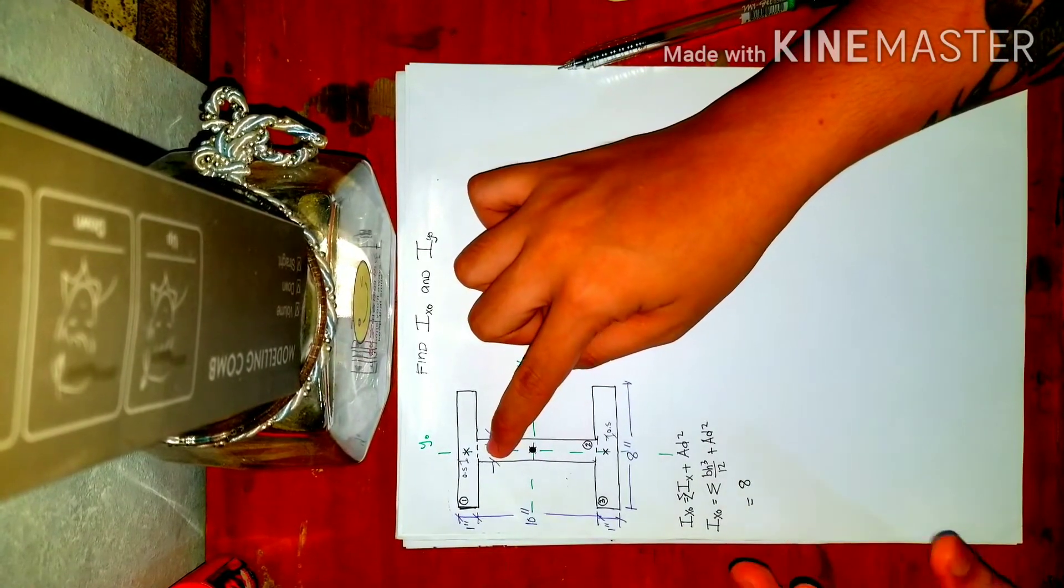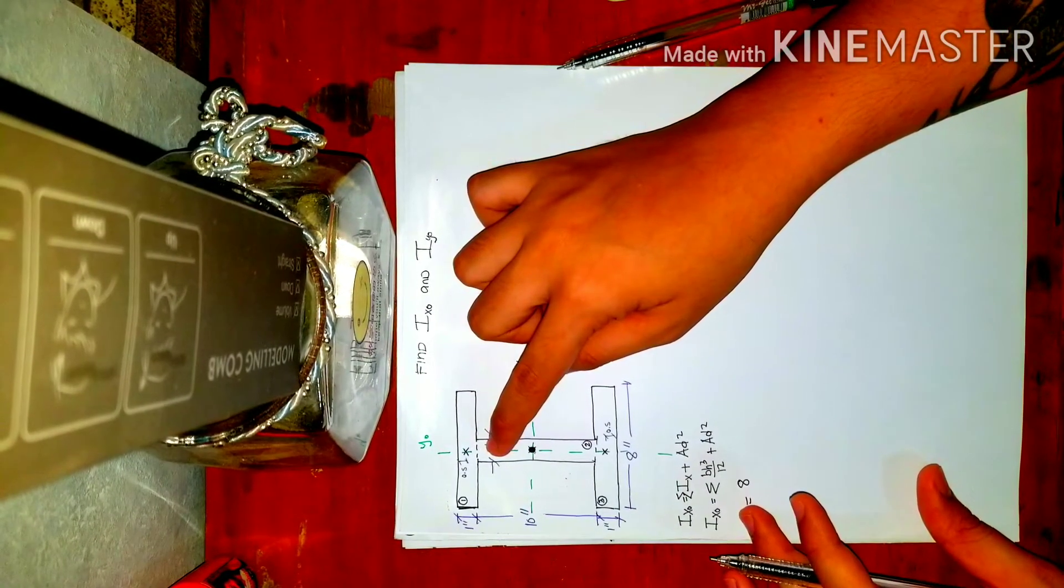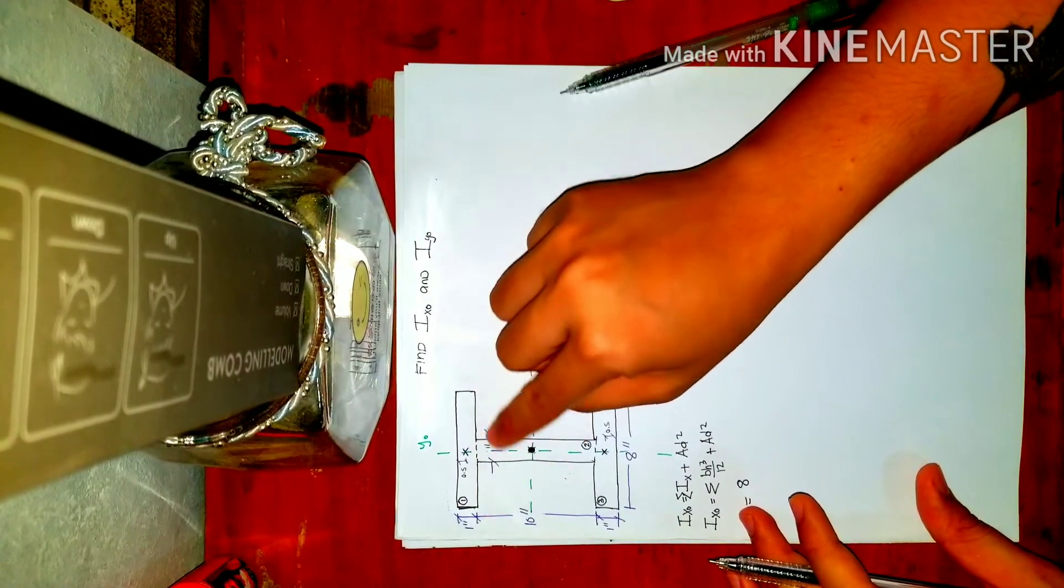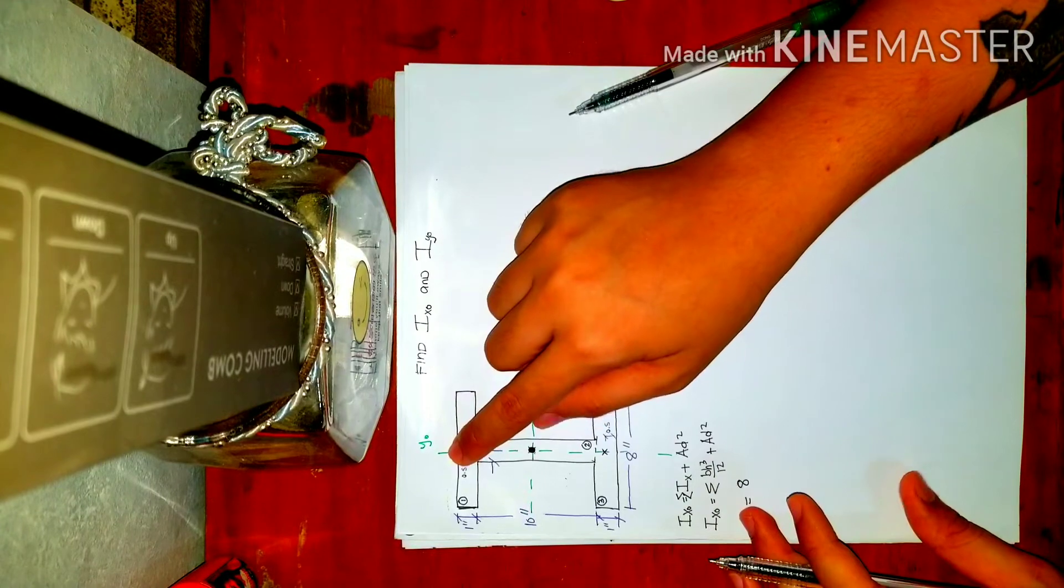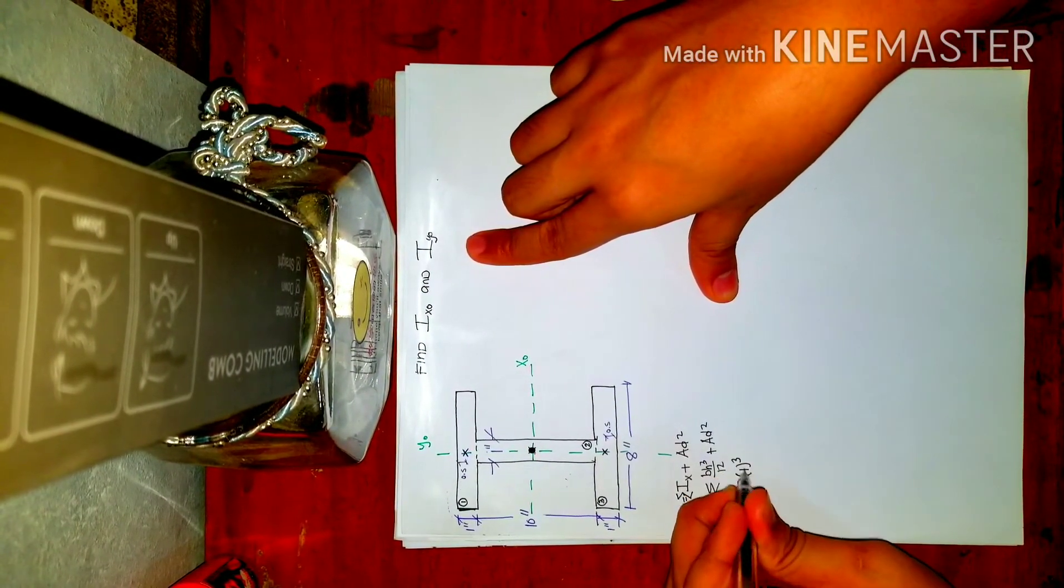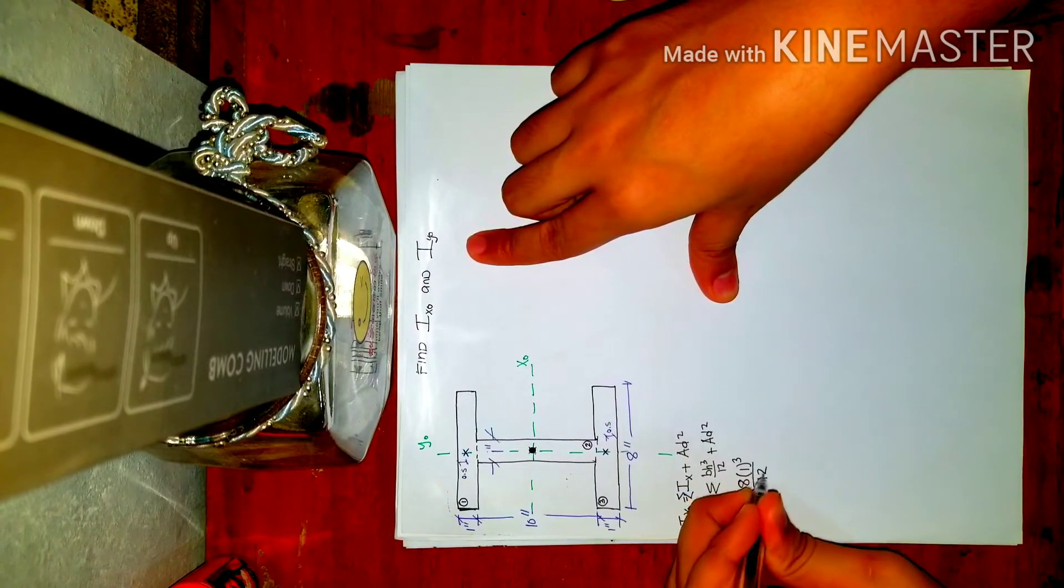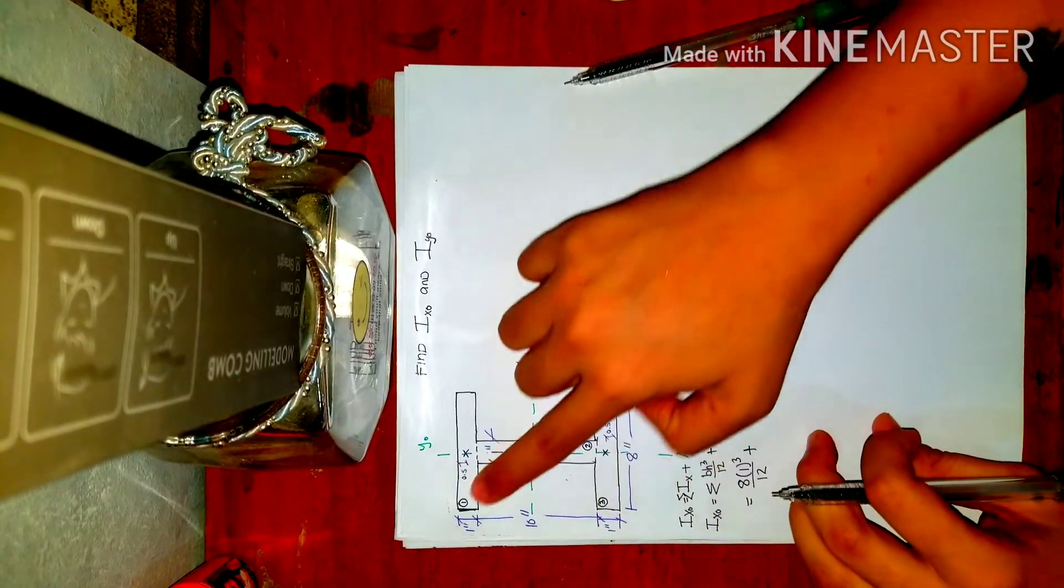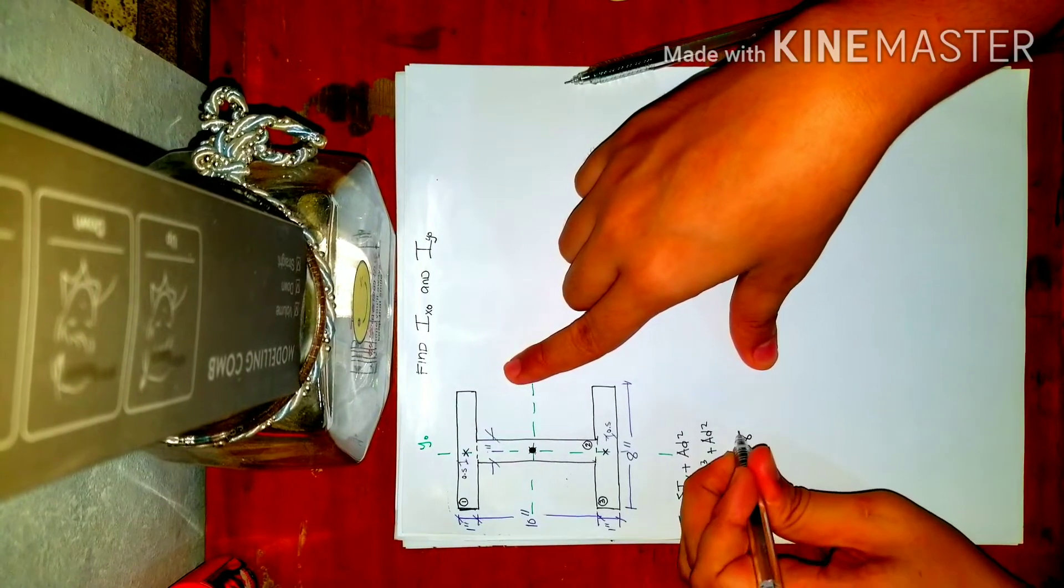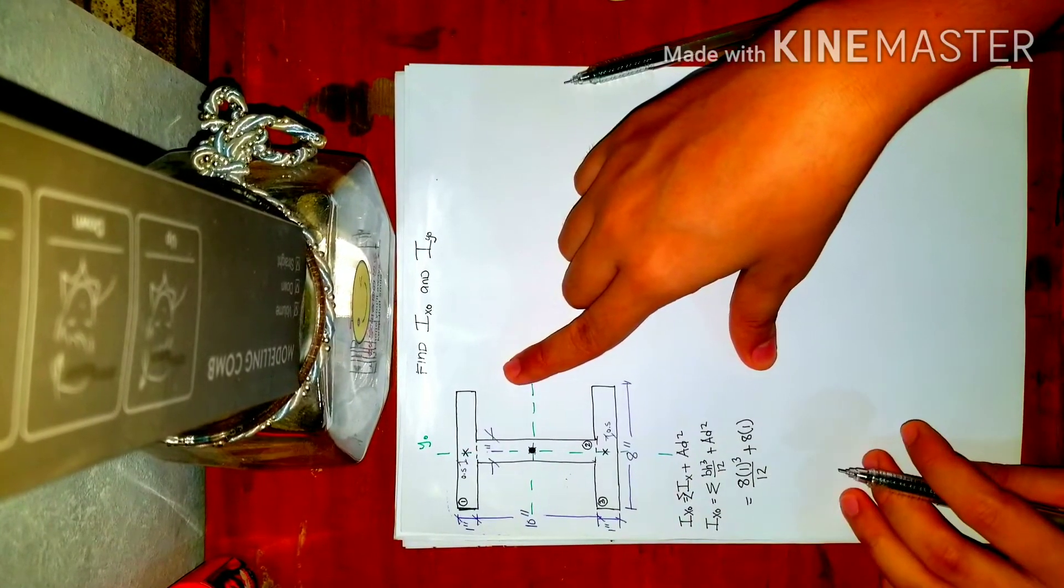So that analysis is effective when the shape you're considering is rectangular or triangular in shape. So 8 times 1 cubed over 12 plus area, so area of rectangle is 8 times 1.